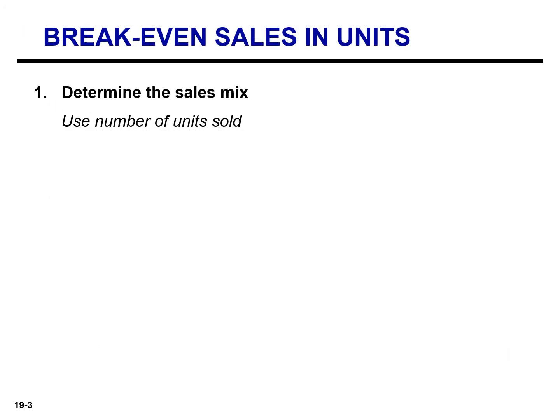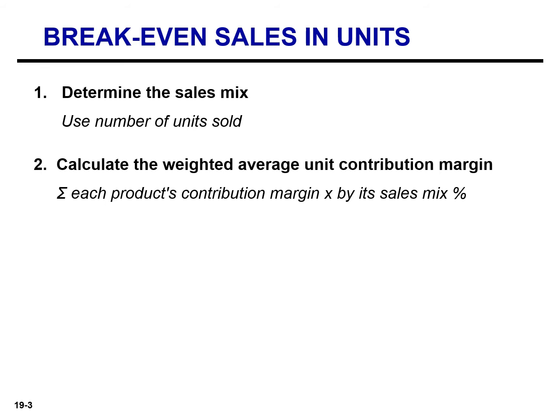When determining break-even sales in units, the first step is to determine the sales mix using the number of units sold. The next step is to calculate the weighted average unit contribution margin — think of this as the average of all the products' unit contribution margins weighted by the sales mix. You multiply each product's contribution margin by the sales mix percentage and then add the results for each product.